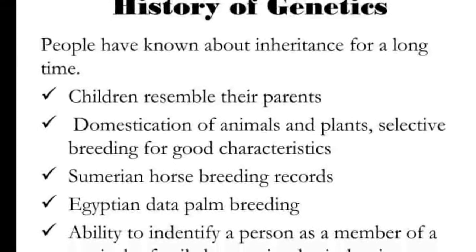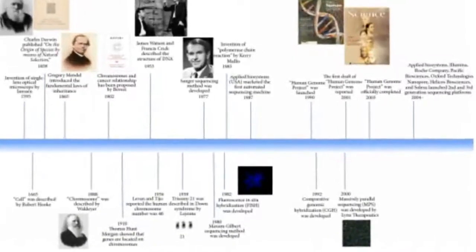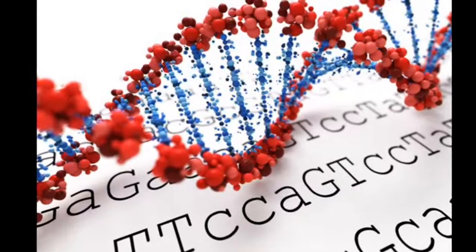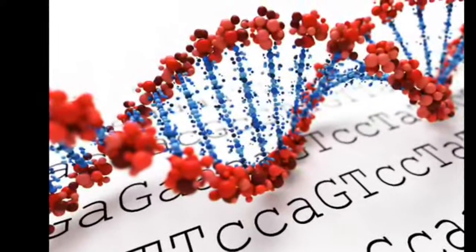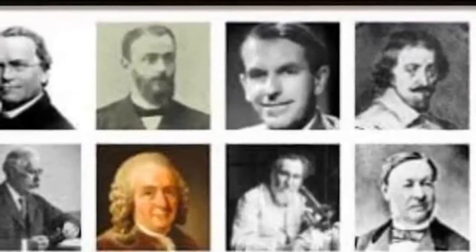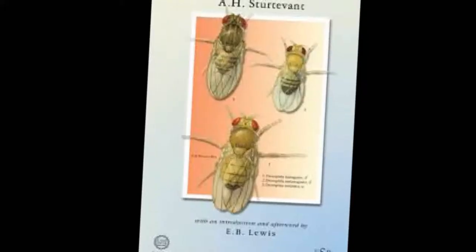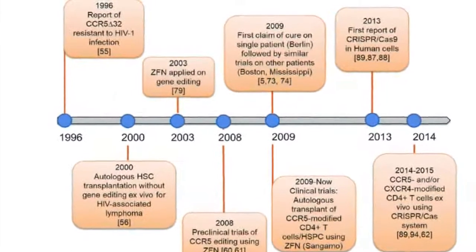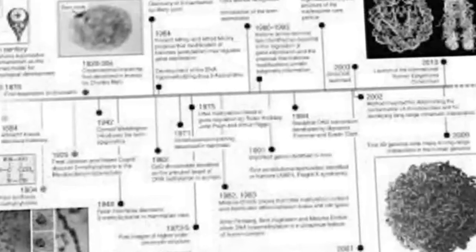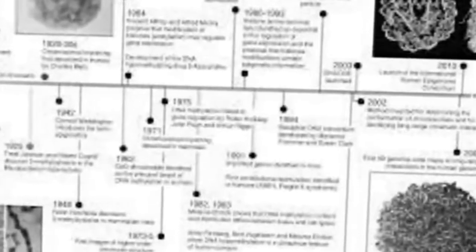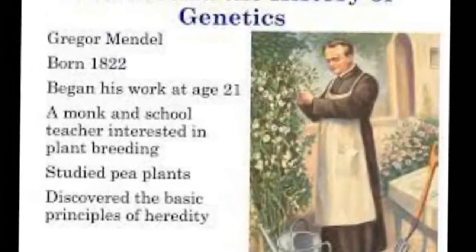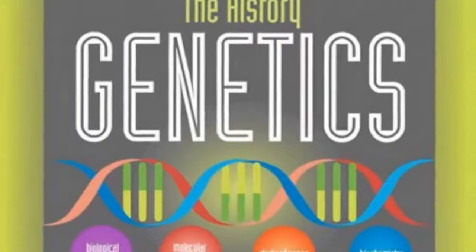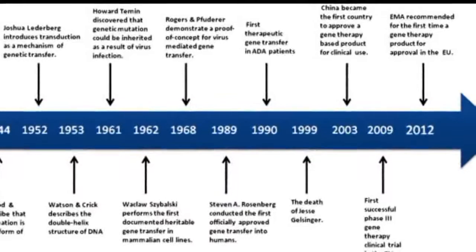In 1972, Walter Fiers and his team at the University of Ghent were the first to determine the sequence of a gene — the gene for bacteriophage MS2 coat protein. Richard J. Roberts and Philip Sharp discovered in 1977 that genes can be split into segments, leading to the idea that one gene can make several proteins. The successful sequencing of many organisms' genomes has complicated the molecular definition of the gene; regions of DNA producing distinct proteins may overlap, giving rise to the idea that genes are one long continuum. It was first hypothesized in 1986 by Walter Gilbert that RNA could serve both as a catalyst and as genetic information storage. The modern study of genetics at the level of DNA is known as molecular genetics, and its synthesis with traditional Darwinian evolution is known as the modern evolutionary synthesis.